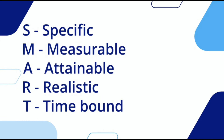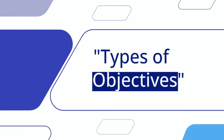A is for Attainable — a research objective should be achievable within the resources, time, and scope of the study. R is for Realistic — a good research objective should be grounded in reality and aligned with what is feasible; researchers should consider practical constraints and not set impossible goals. T is for Time-bound — the objective should have a specific time frame within which it will be accomplished, helping researchers focus and ensure the study progresses effectively.